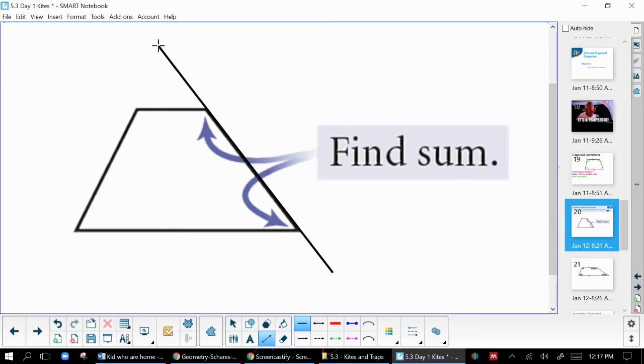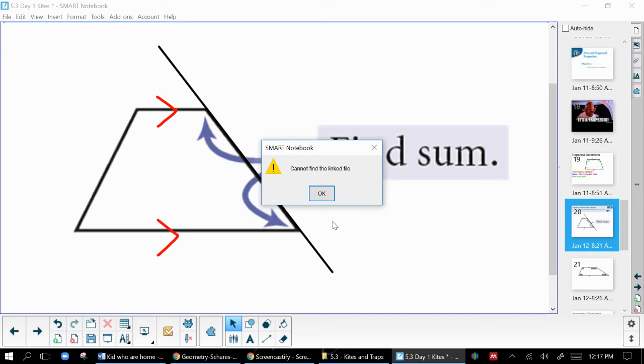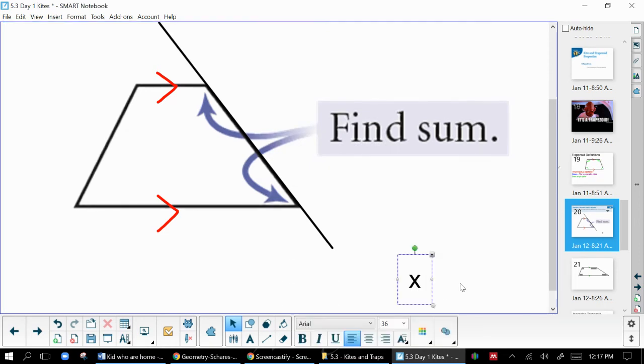If I were to draw a line kind of like that and go all the way through, and I know that the top and the bottom here are parallel to each other, thinking about something that we know, if I were to look at this measurement here, we would know that this measurement up here is exactly the same. Those are called corresponding angles.